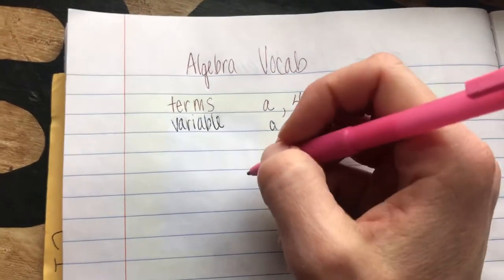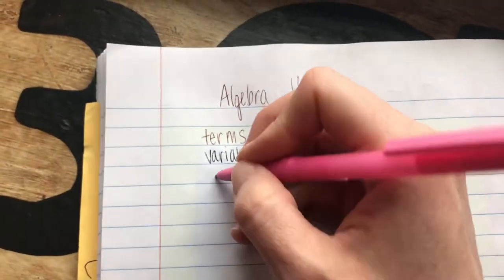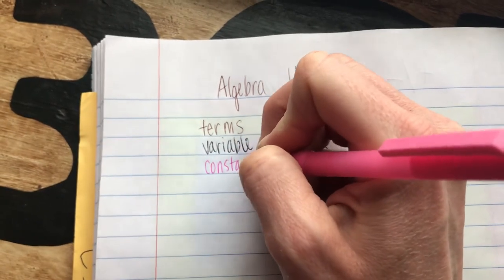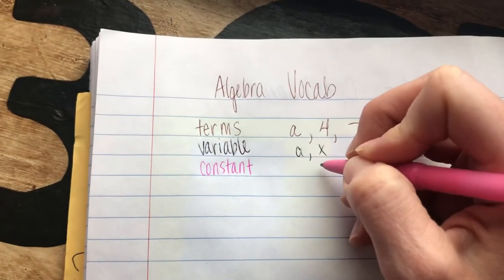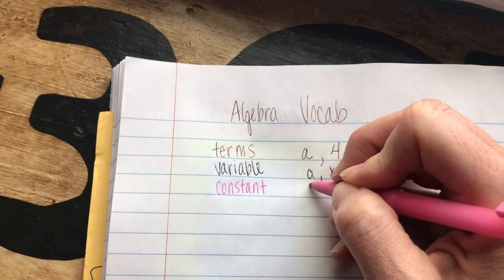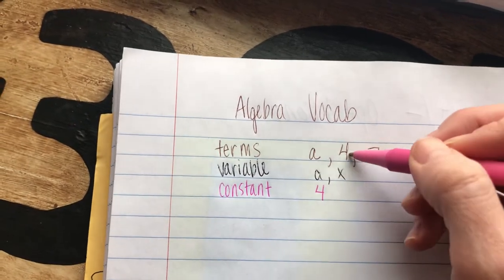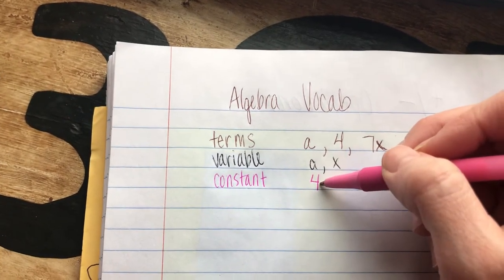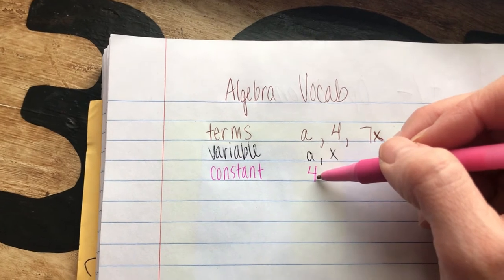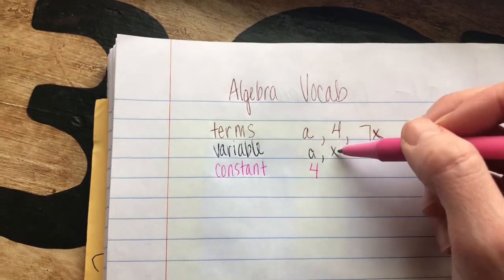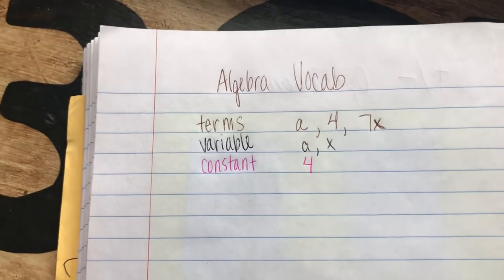The next one is constant. A constant is a number in an expression or equation, like 4 in the above example, because it doesn't change. It's always 4, whereas the variable could be different in different situations. The constant stays the same.